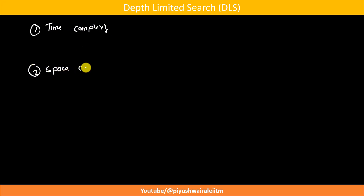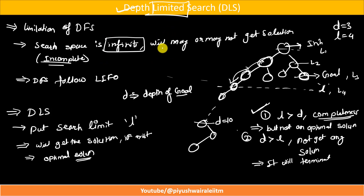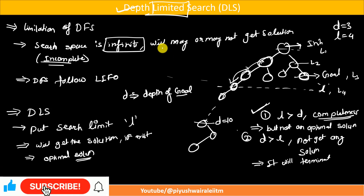Now for complexity. Time complexity is O(b^L) — compared to DFS where it is O(b^d), here we replace d with our limit L. Space complexity is O(b × L) — in DFS it is O(b × d), but in Depth Limited Search we put a limit on the algorithm, so it cannot go beyond that limit. That is why the time and space complexity are expressed in terms of L.